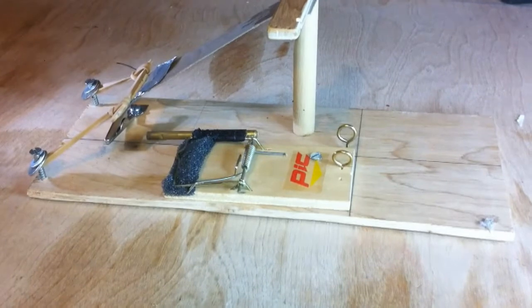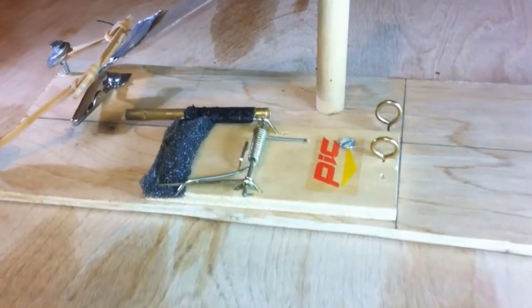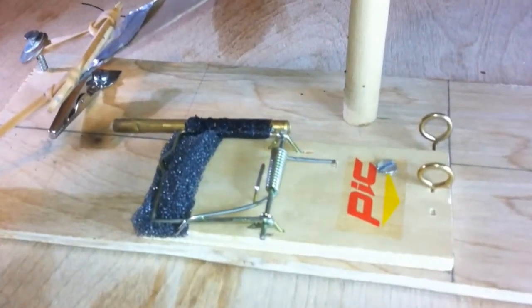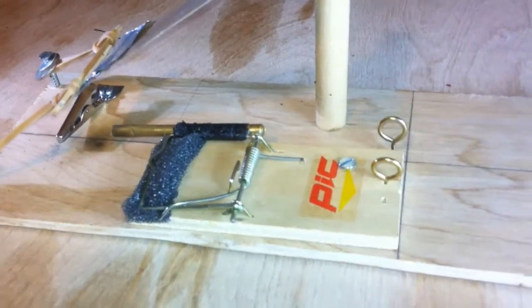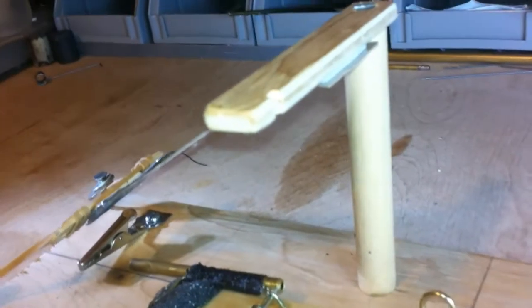The design is fairly simple. It is a mousetrap mounted to a piece of quarter inch plywood. Attached to the mousetrap's arm is a piece of brass tubing. A match will eventually go into this brass tubing.